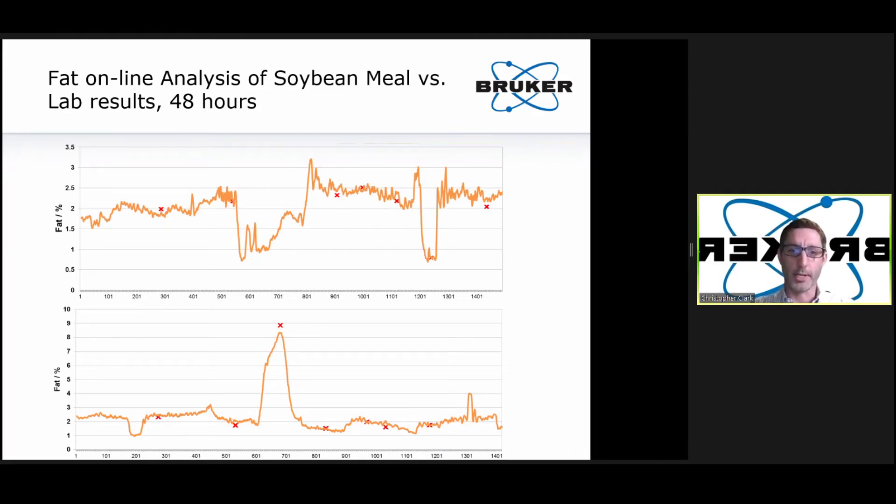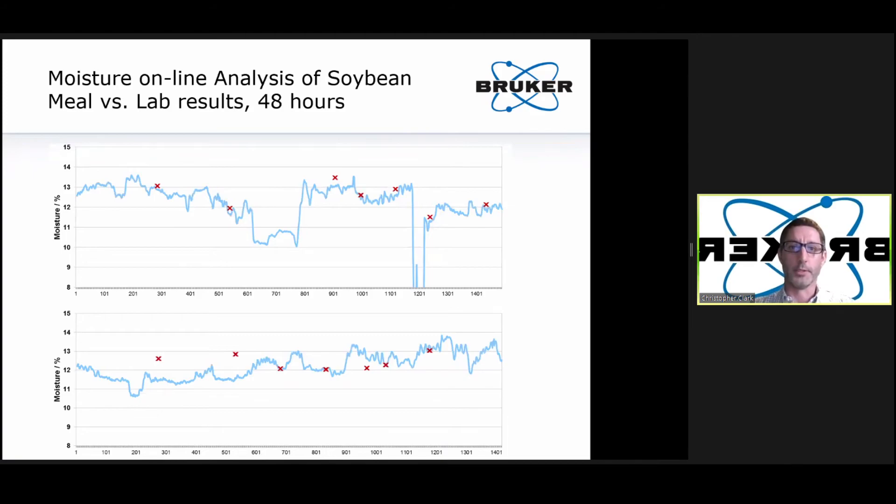And you can see, this is just an example of fat trending over time. The orange line represents the results from the spectrometer, and the red X's represents grab samples that were pulled and run to test against the results of the spectrometer. And you can see a pretty tight correlation with how the analyzer is actually reading versus what the lab results are showing. So this is conceptual proof that you can use this technology to accurately monitor your process in more real-time fashion.